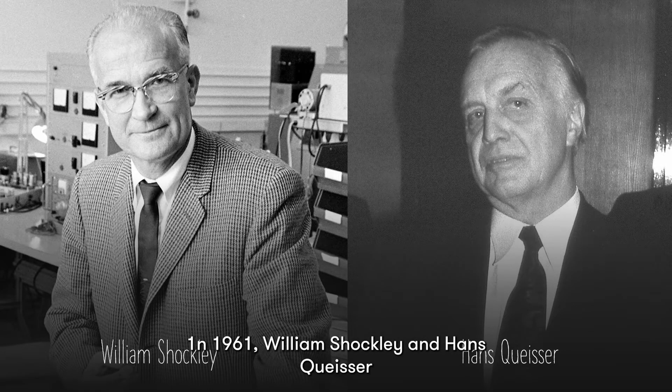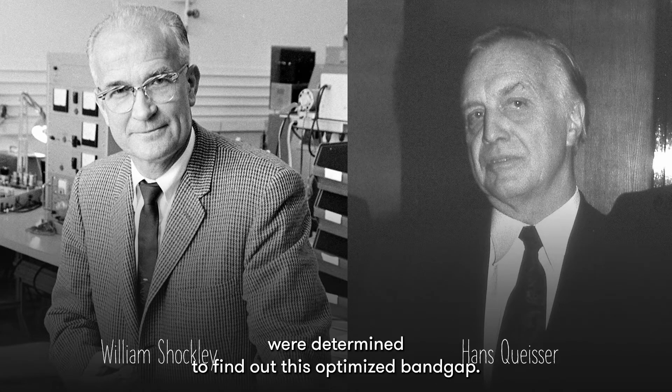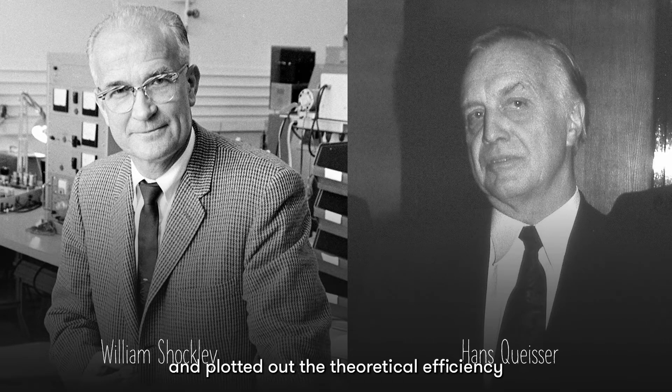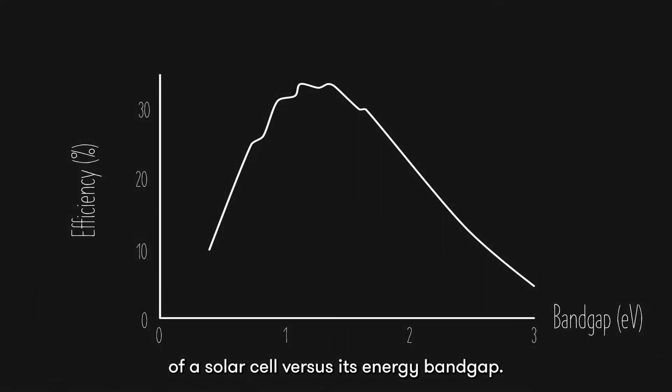In 1961, William Shockley and Hans Quaser were determined to find out this optimized band gap. They used a set of theoretical equations and plotted out the theoretical efficiency of a solar cell versus its energy band gap.